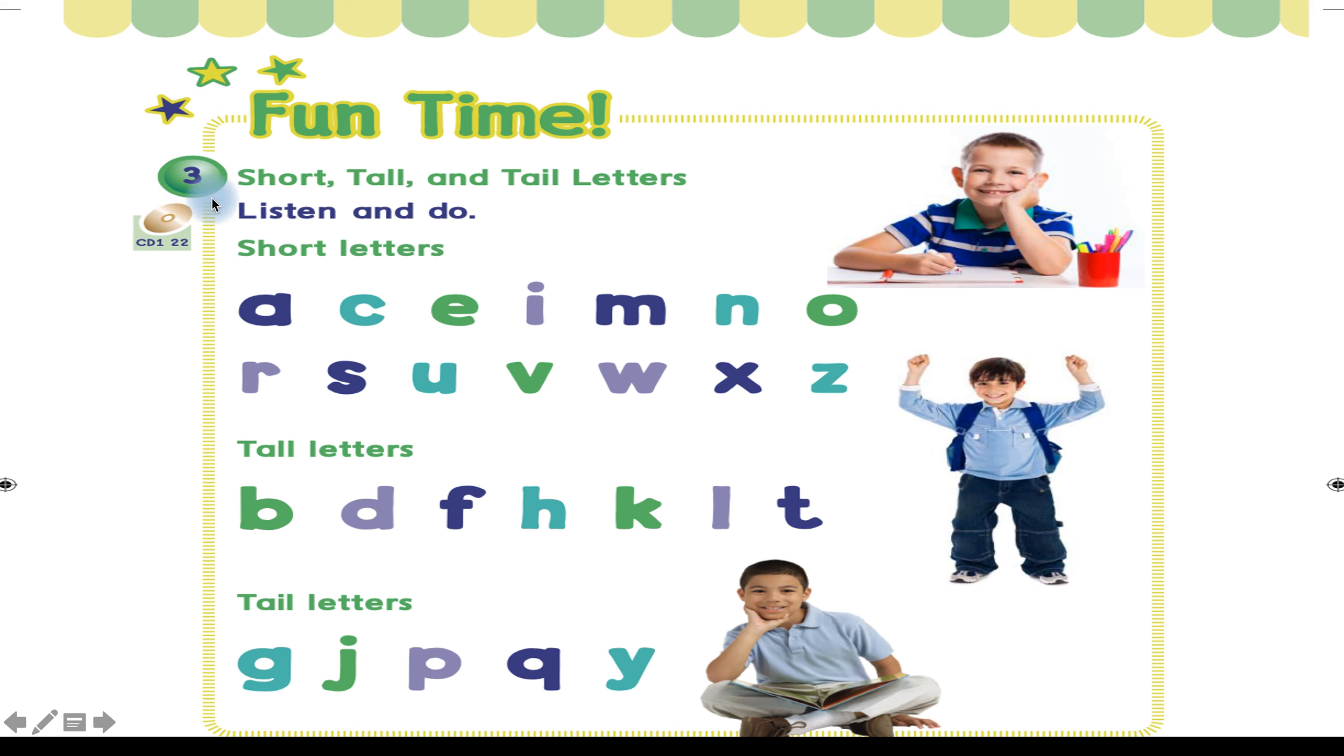Exercise three: Short, tall, and tail letters. Listen and do like this. When you hear a short letter, you stay on your seat. The short letters are: A, C, E, I, M, N, O, R, S, U, V, W, X, Z. When you hear a tall letter, you stand up. The tall letters are: B, D, F, H, K, L, T. When you hear a tail letter, you sit on the floor. The tail letters are: G, J, P, Q, Y.